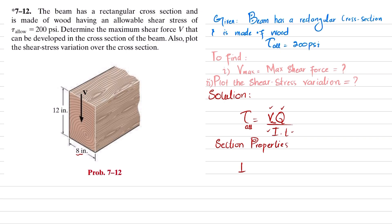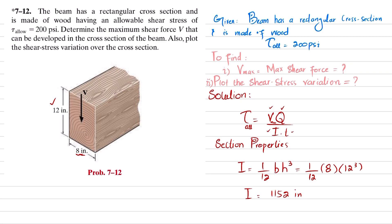For a rectangular cross section, I = (1/12)bh³. The breadth b is 8 inches and the height h is 12 inches, so I = (1/12)(8)(12³). When you calculate this, I comes out to be 1152 in⁴.